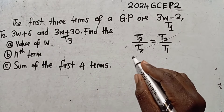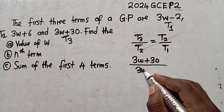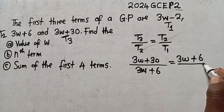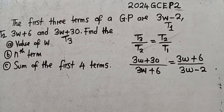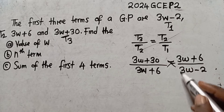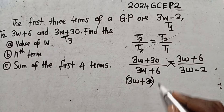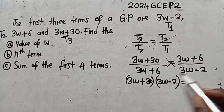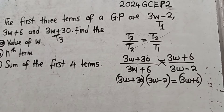We now substitute the values. T3 is 3w plus 30, T2 is 3w plus 6, and T1 is 3w minus 2. So we have: (3w + 30) / (3w + 6) = (3w + 6) / (3w − 2). We cross-multiply to find the value of w.